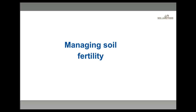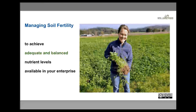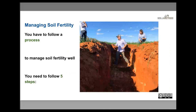Now I'm going to cover the key fundamental steps for managing soil fertility well. These apply whether you're managing pastures, tree crops, row crops, or broadacre cropping — they're general steps you can take. Depending on your enterprise, yield goals, and whether you're organic or conventional, you might have different tactics, but the steps I think are common. To achieve adequate and balanced nutrient levels — like this pumpkin grower Sharon in North East Victoria — we need to follow a bit of a process. I'll sum it up as five steps.